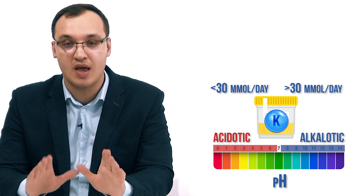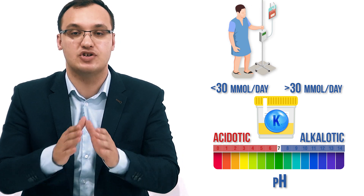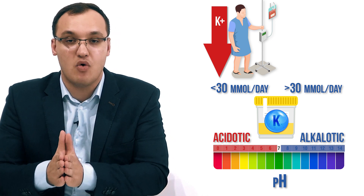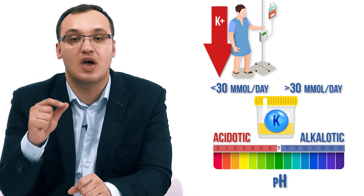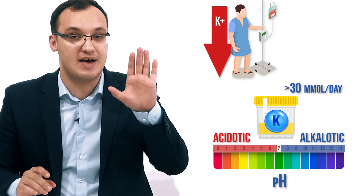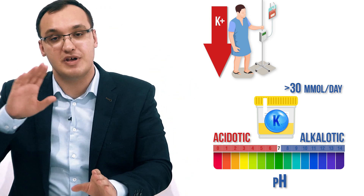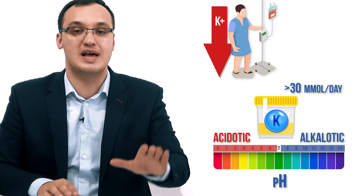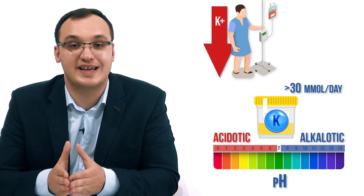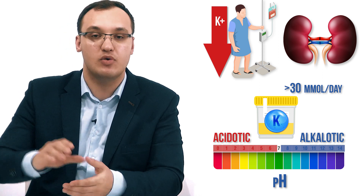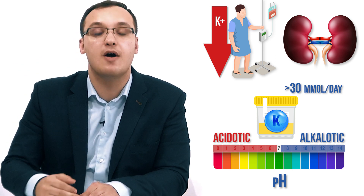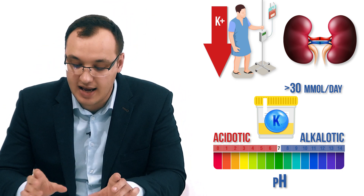So we have four possible scenarios. The main finding is the patient has hypokalemia — low potassium in the blood. Then we differentiate: the patient can have high potassium in the urine or low potassium in the urine. High urine potassium (more than 30 millimoles per day, or a potassium-to-creatinine ratio greater than 1.5) tells us it's somehow related to the kidney.